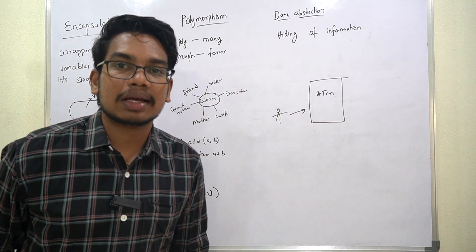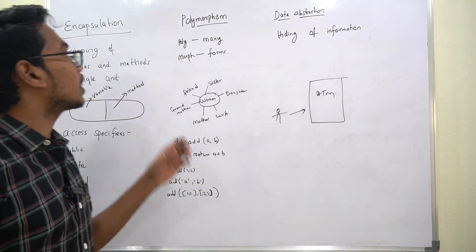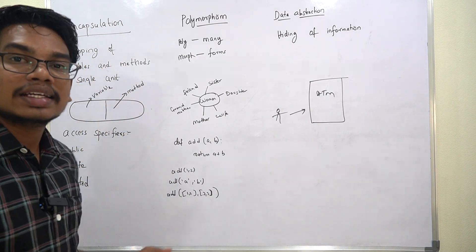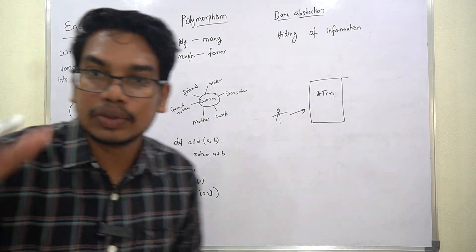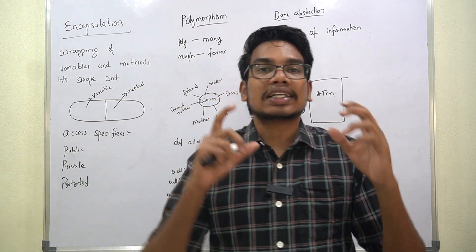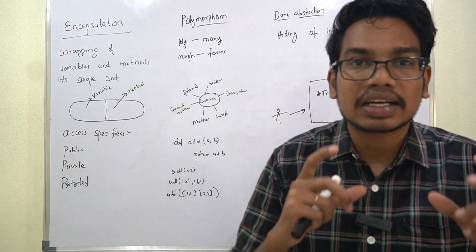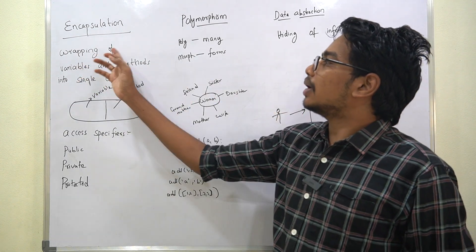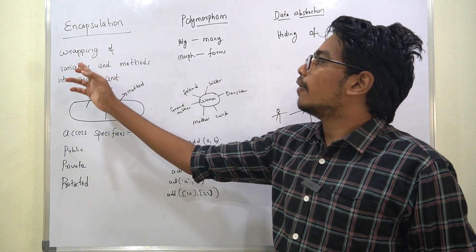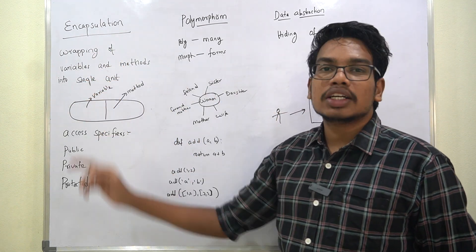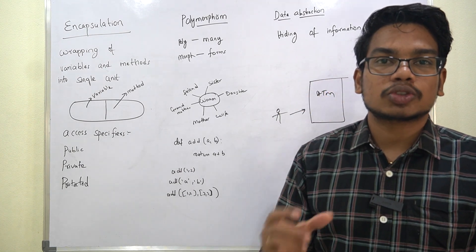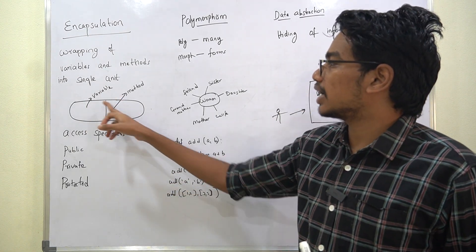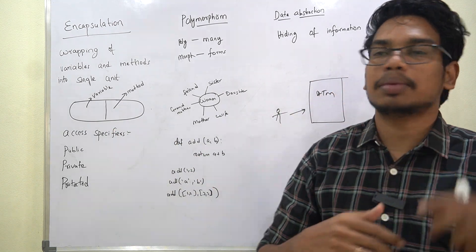So first, what is Encapsulation? Encapsulation is the wrapping of variables and methods into a single unit. You have a class and variables — wrapping them together like a capsule is what we call encapsulation.